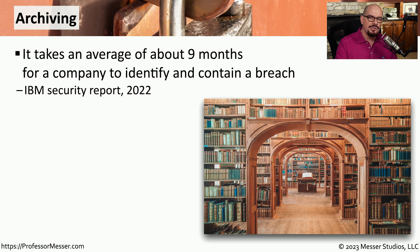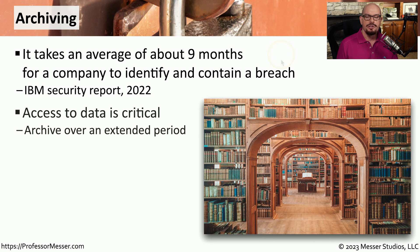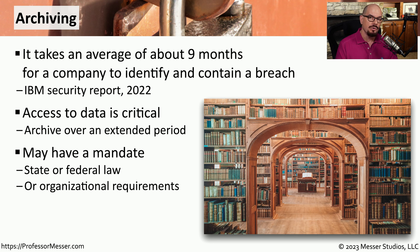In the movies, an attacker will gain access to a network and instantly alarms go off, and everyone discovers the attacker. The reality, however, is quite different. An IBM security report in 2022 documented that it takes an average of about nine months for a company to identify and contain a breach. During that nine-month period, the attacker is inside the network, looking at other systems, gaining access to applications and resources, and finding their home inside your network. This is just one of the reasons why having a very long-term backup strategy is so important. You never know when an attacker may gain access, and they may be sitting in your network for months or even years before being discovered. In some organizations, you may be mandated by state or federal law to collect data over a certain amount of time — not only to provide information about how the business is performing, but also from a security perspective to understand what may be happening with attackers inside your network.